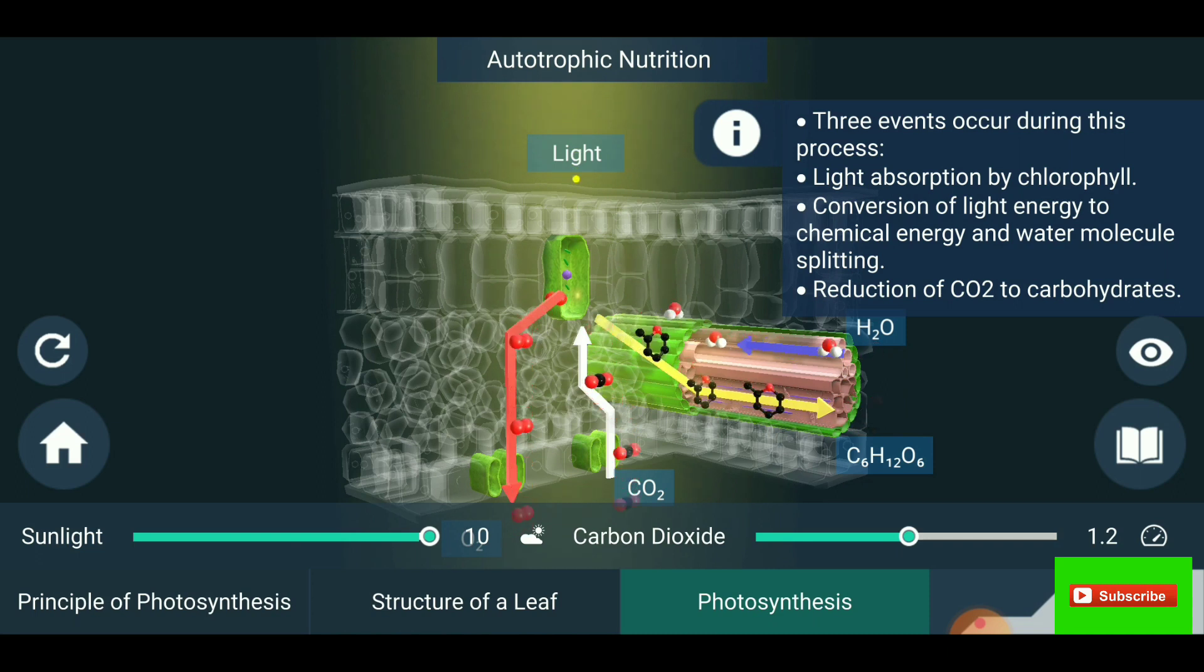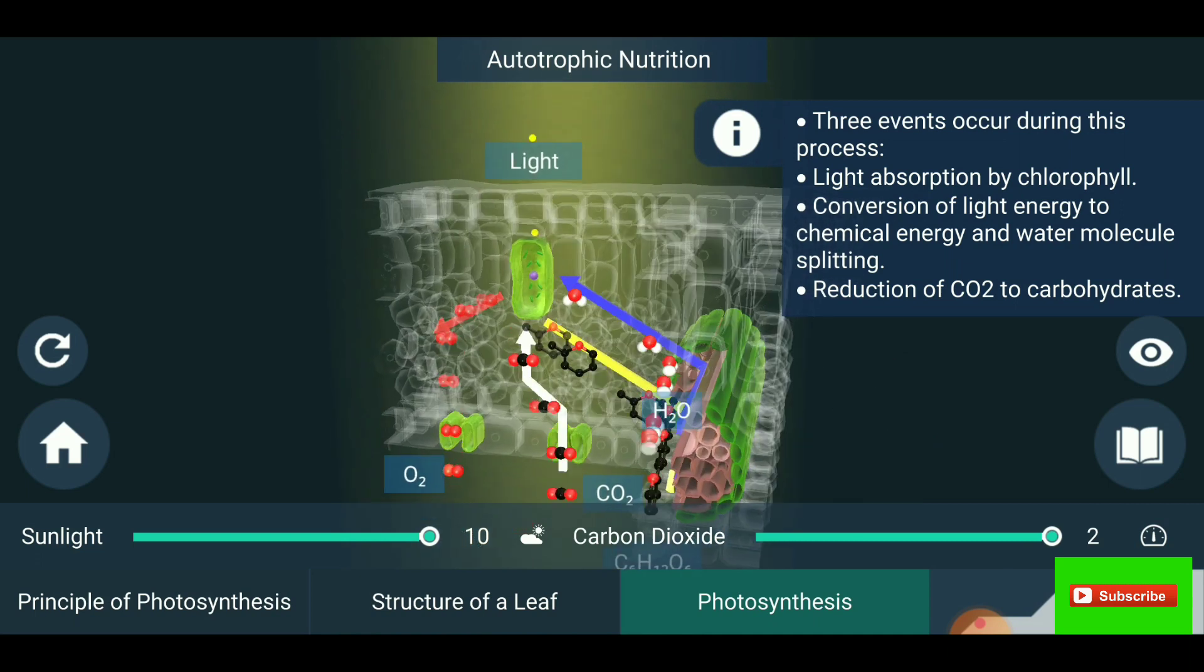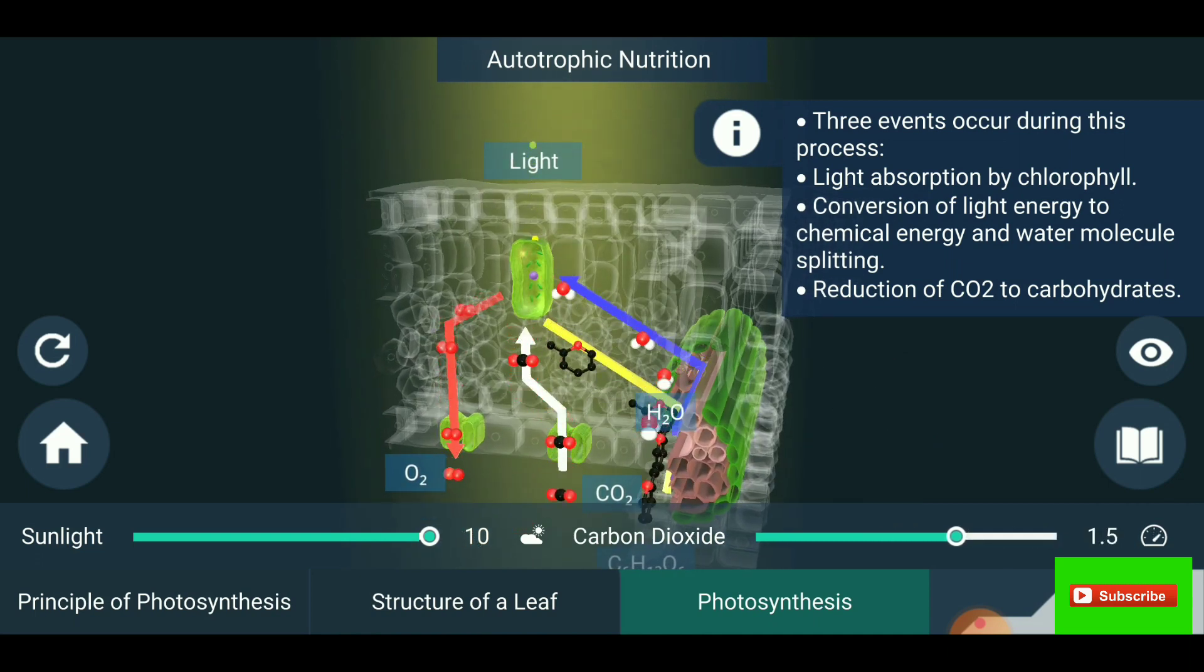Also increasing carbon dioxide. You are seeing the activity - the production of glucose will be more, intake of water will be more, carbon dioxide is also more. So the sunlight and carbon dioxide also variates the autotrophic nutrition.